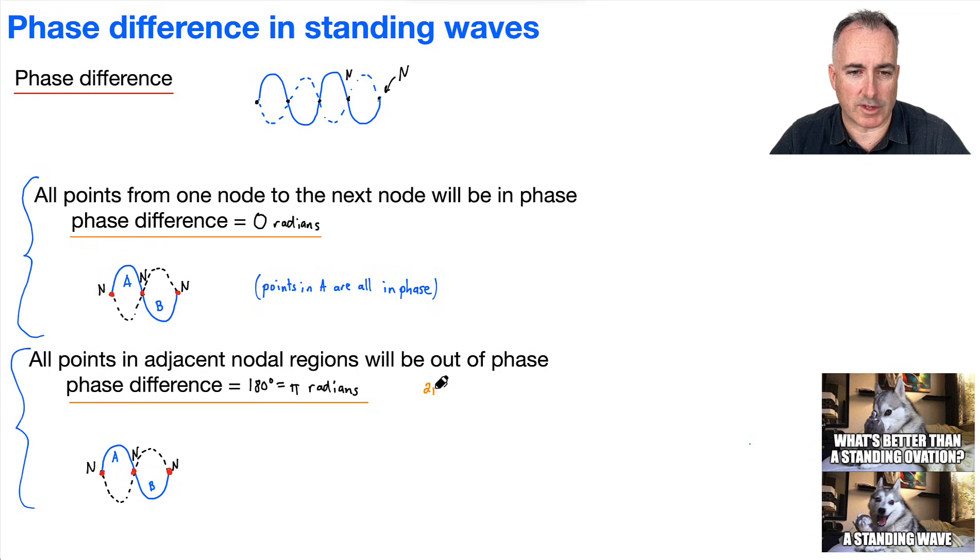It helps to know that 2 pi is 360 degrees, and so that means pi must be 180 degrees. Basically, we just say that these things are out of phase. That's the word we're going to be using: in phase, and out of phase.